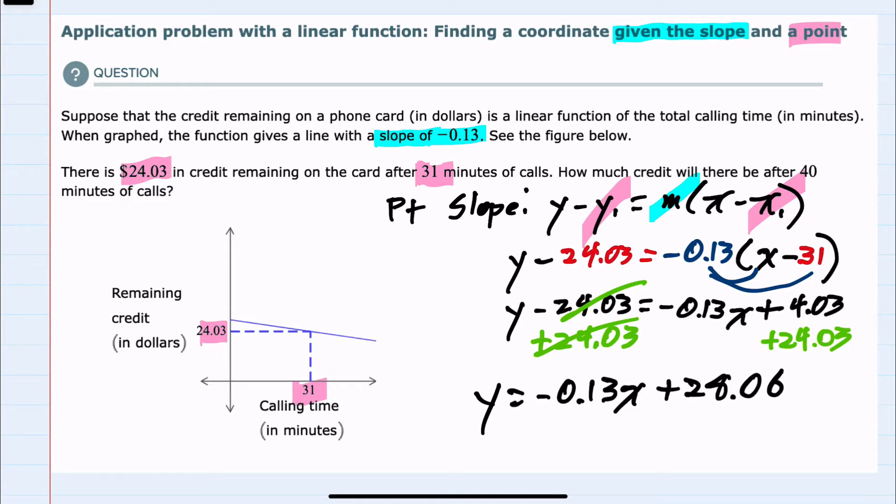We have found the function for this situation. If we look back at the question, we're asked how much credit will be left after 40 minutes of calls.